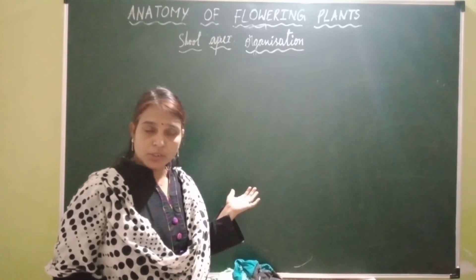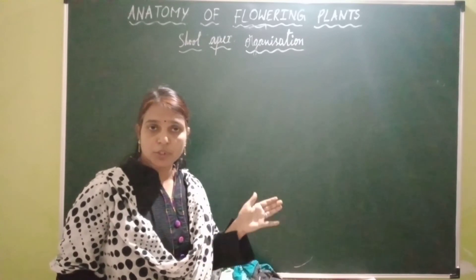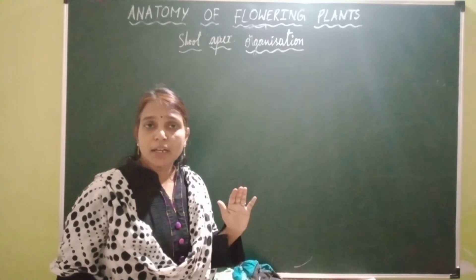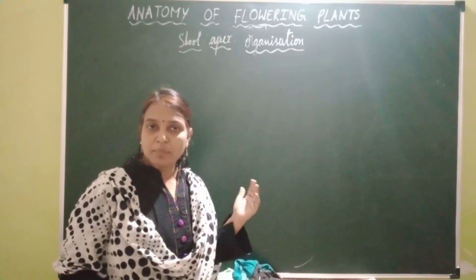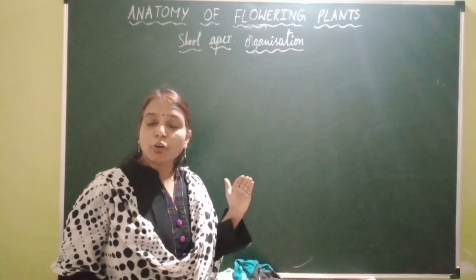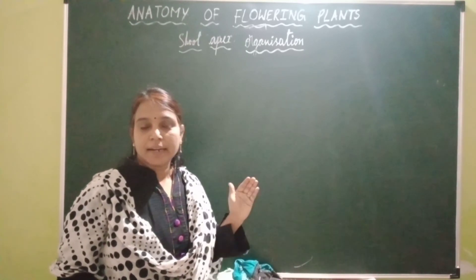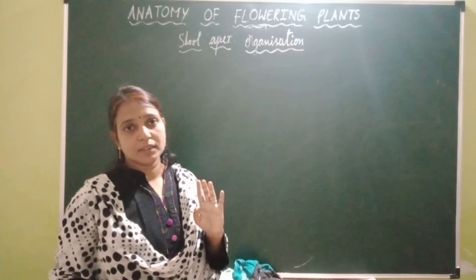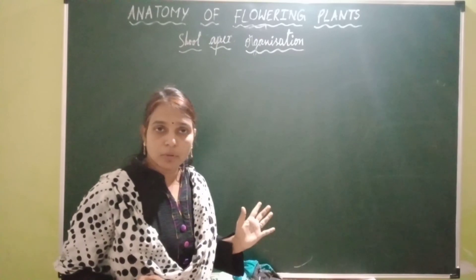The tunica is involved in the formation of the epidermal tissue system, while all remaining tissue systems — the ground tissue system and vascular tissue system — are formed by the corpus. In the case of multi-layered tunica, the outermost layer forms the epidermis and the rest contribute to ground and vascular tissue systems along with corpus.